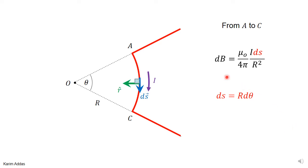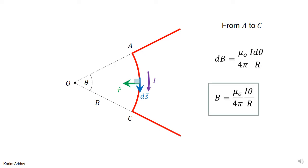The magnitude of dB due to a single current element is μ₀i ds/(4πr²). Since r is the same everywhere along the arc — it's the same radius — r is not a variable. We substitute ds = r dθ for the arc length element, and one factor of r cancels between numerator and denominator.